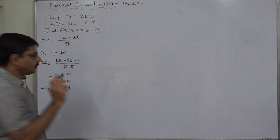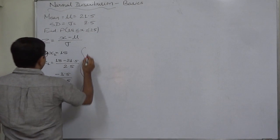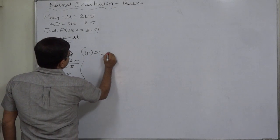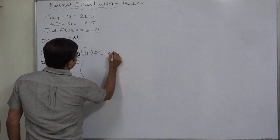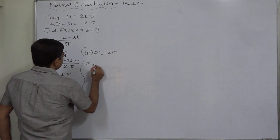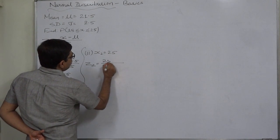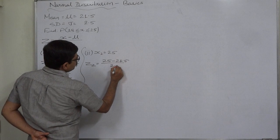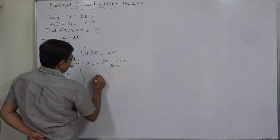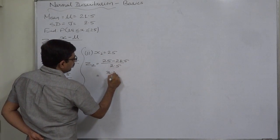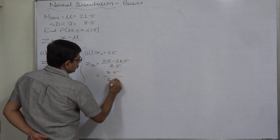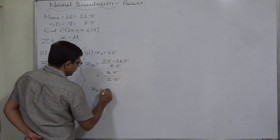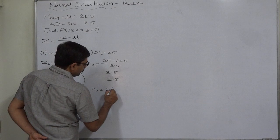The higher limit of x is 25. For that, z = (25 − 21.5) / 2.5 = +3.5 / 2.5. So here z takes the value +1.4.